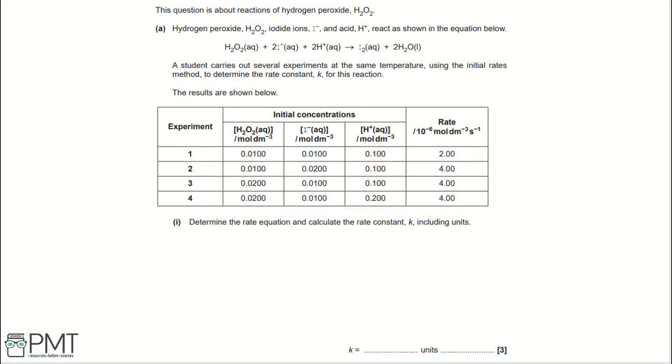This question is about the reactions of hydrogen peroxide, H2O2. Part A: Hydrogen peroxide, H2O2, iodide ions I-, and acid H+, react as shown in the equation below. A student carries out several experiments at the same temperature using the initial rates method to determine the rate constant K for this reaction. The results are shown below.